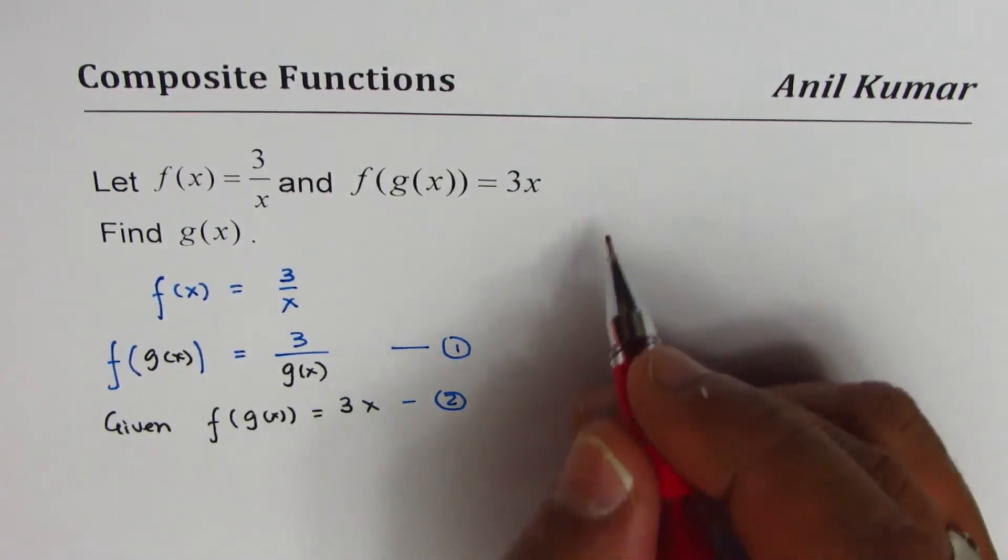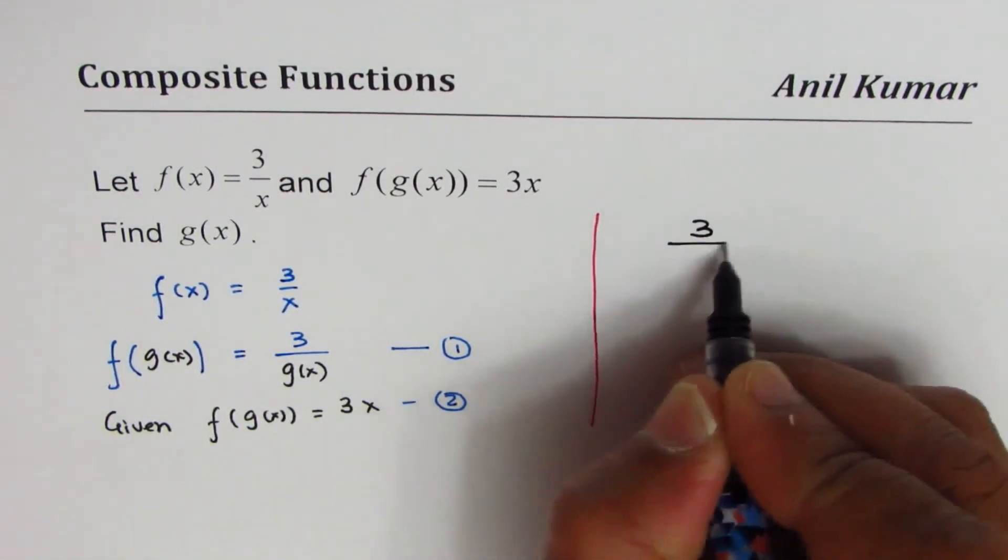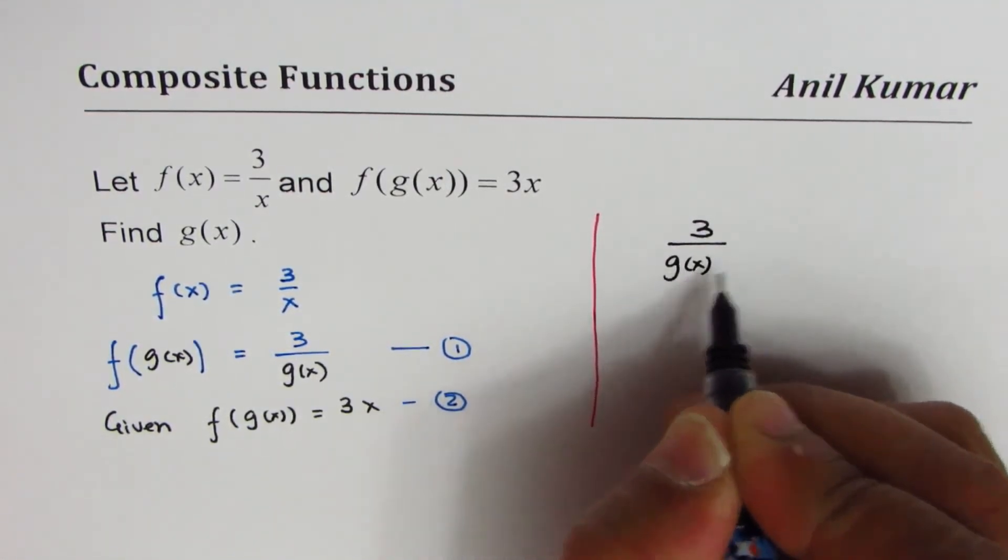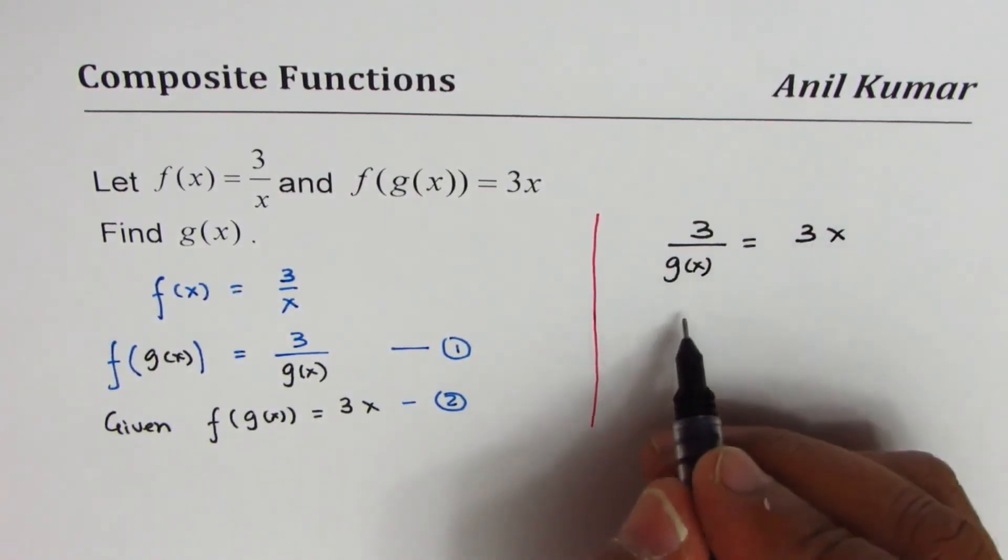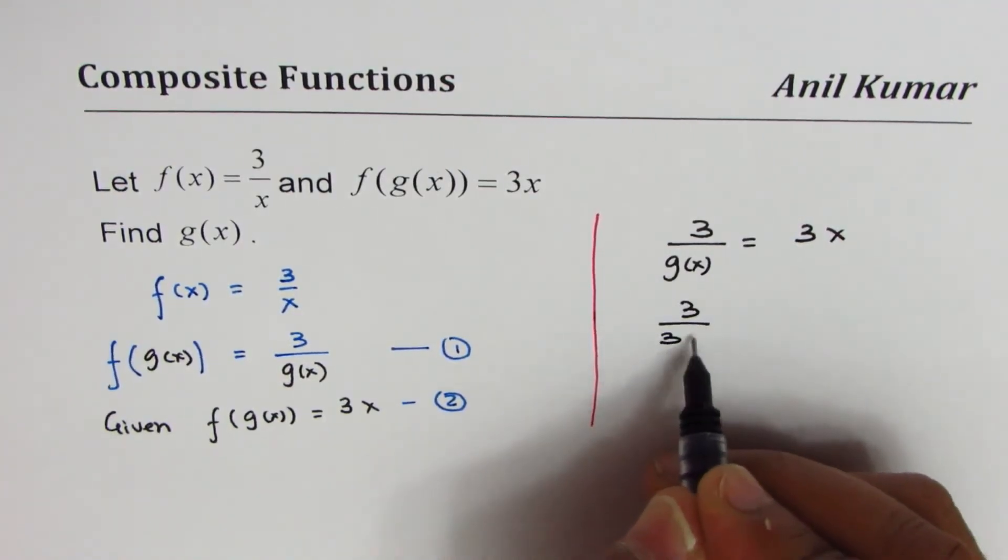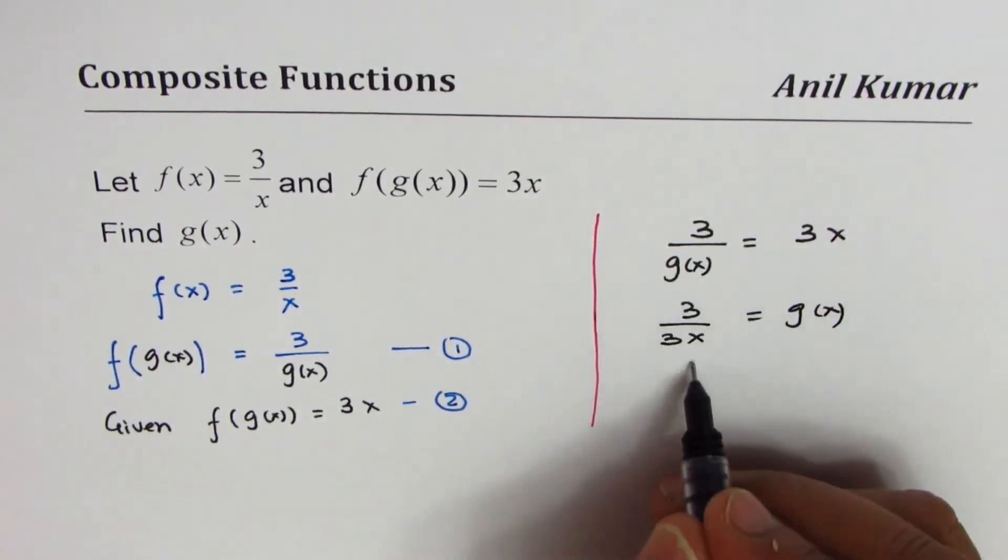Let's equate them and find g(x), which is the only unknown here. So we have 3/g(x) = 3x. Cross multiply: 3/(3x) = g(x), which is 1/x = g(x).